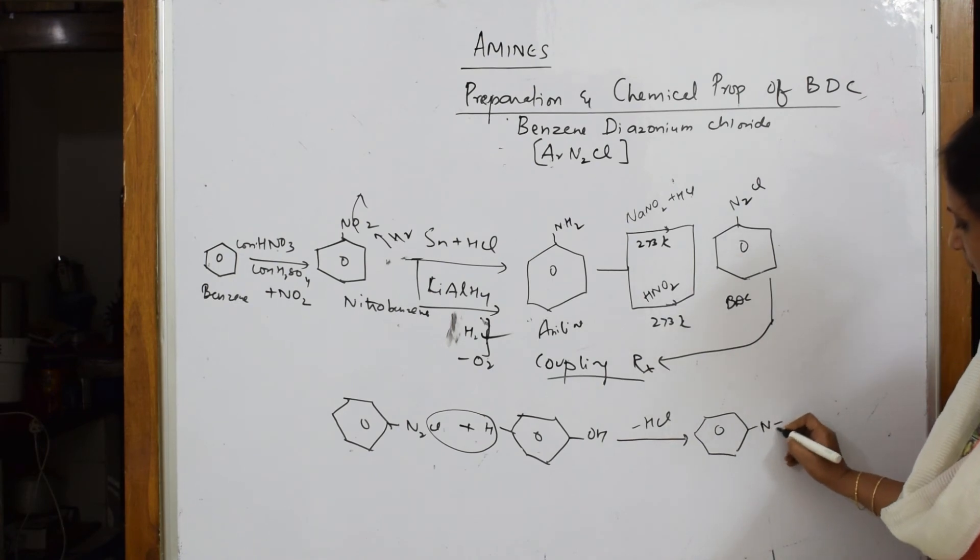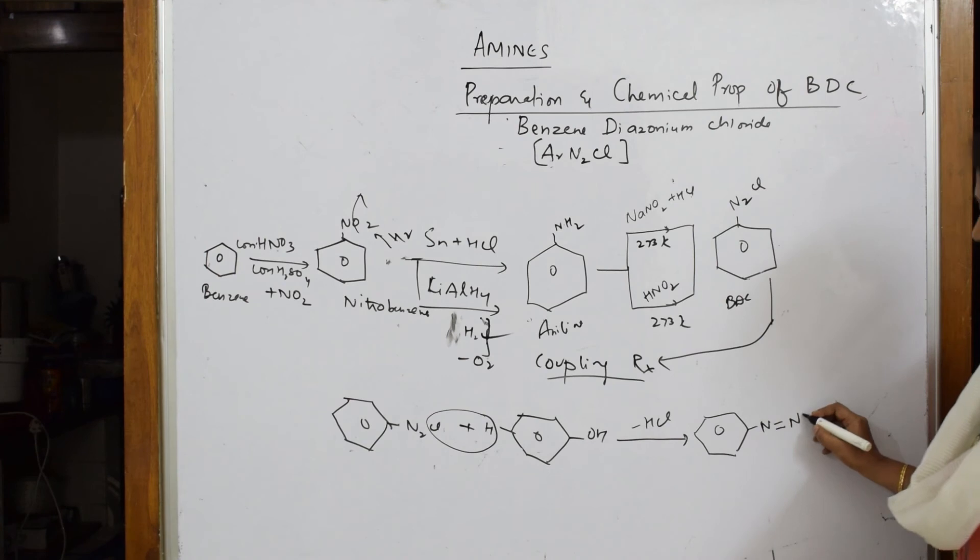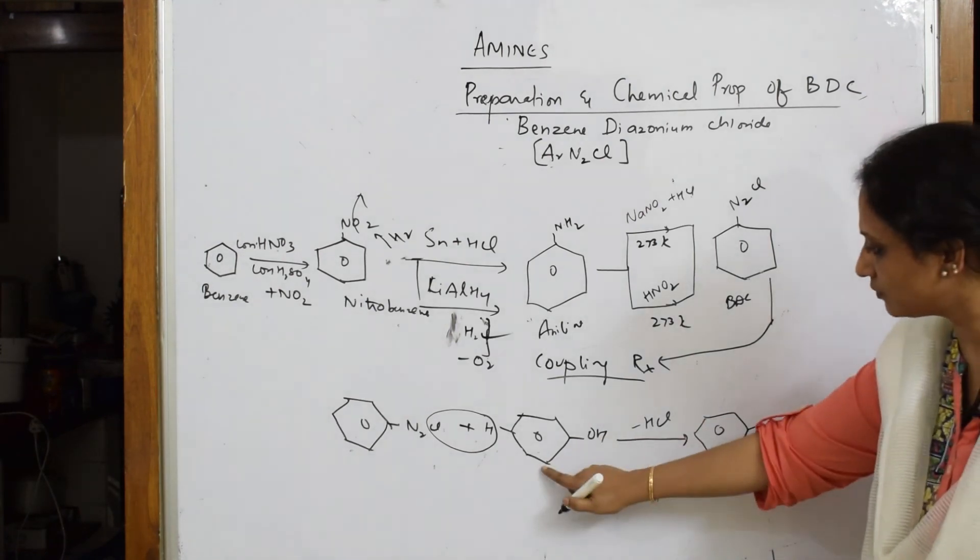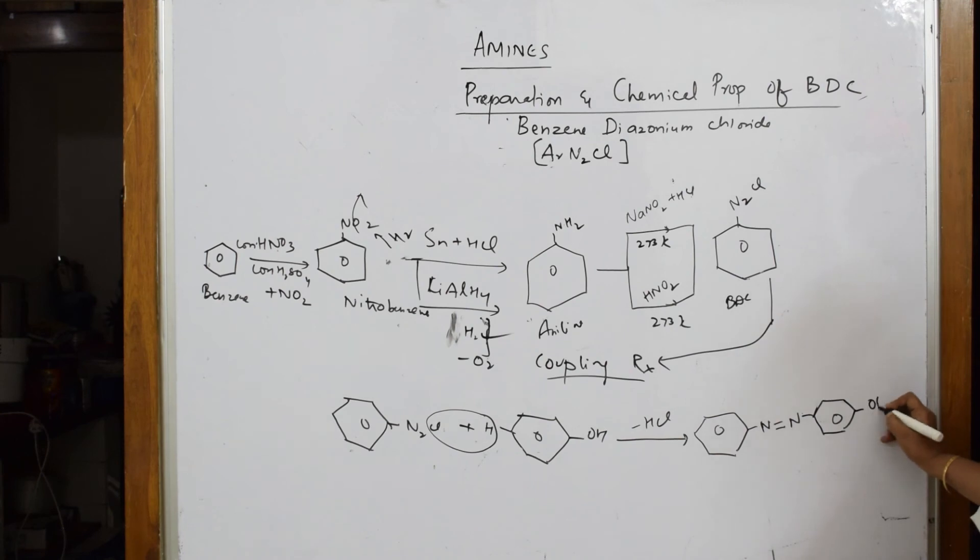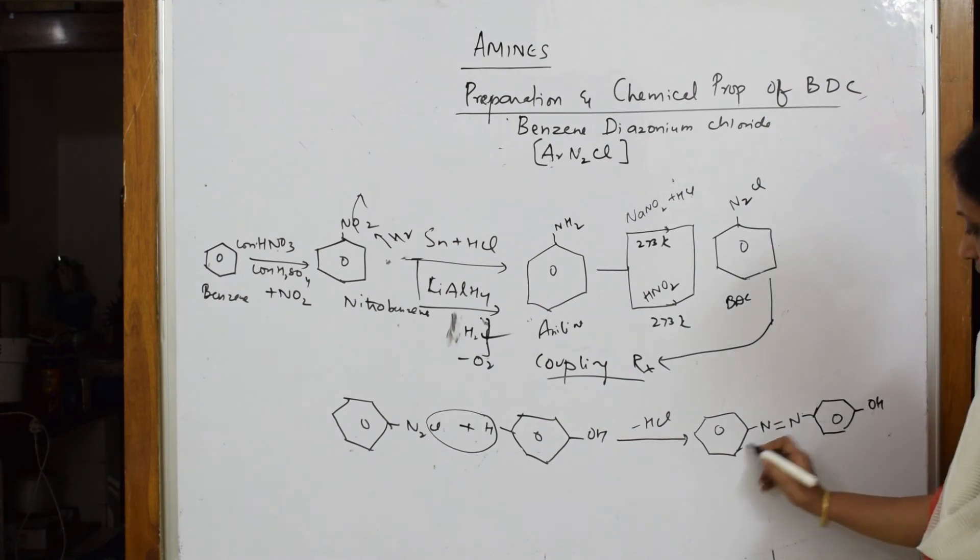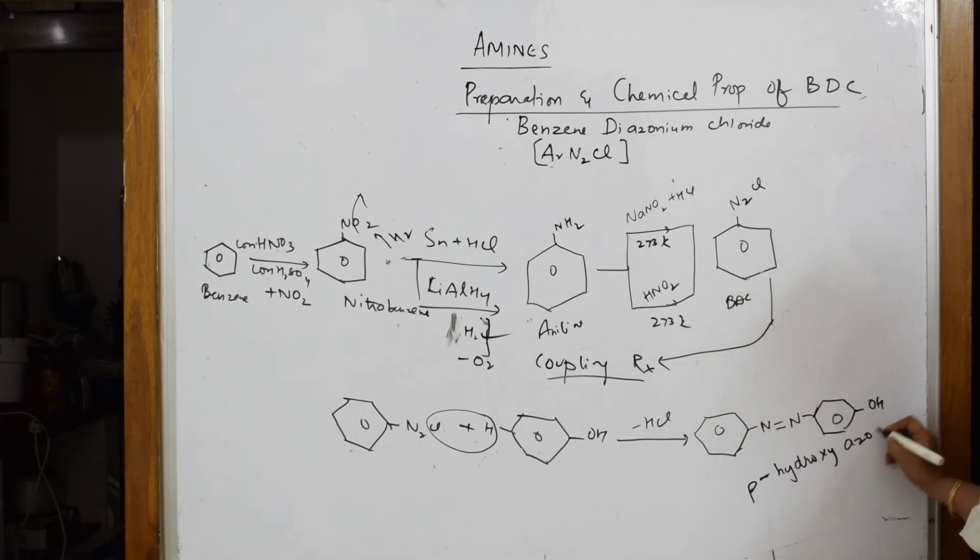When HCl is lost, what product do you get? You get a benzene ring here, one nitrogen double bond, this is the azo group, linked with one more benzene with OH in the para position. What is this compound? Para hydroxy azobenzene.